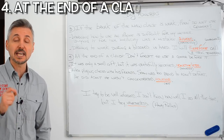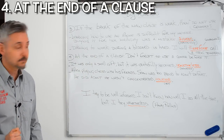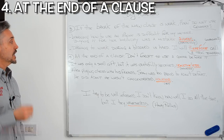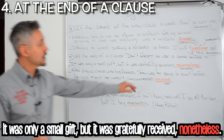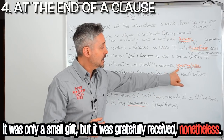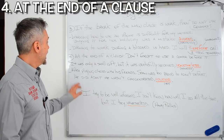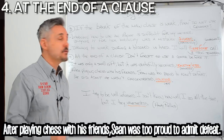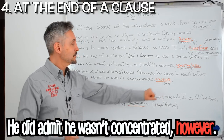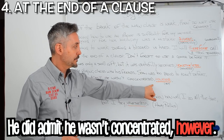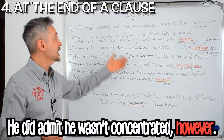The last point is that conjunctive adverbs are also used at the end of a clause. Don't forget to use a comma before it. For example: 'It was only a small gift, but it was gratefully received nonetheless.' Here, 'nonetheless' — which means 'however' — is preceded by a comma. Another example: 'After playing chess with his friends, Sean was too proud to admit defeat. He did admit he wasn't concentrated, however.' Here 'however' means 'yet' and is preceded by a comma. We can use 'nonetheless', 'therefore', or 'indeed' as a conjunctive adverb at the end of a clause.